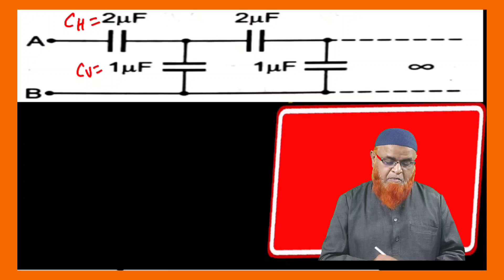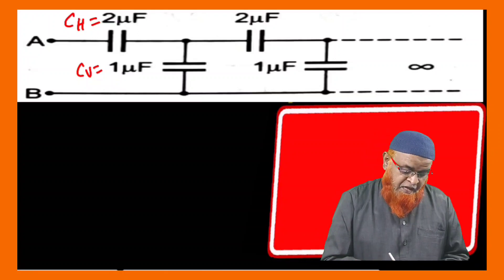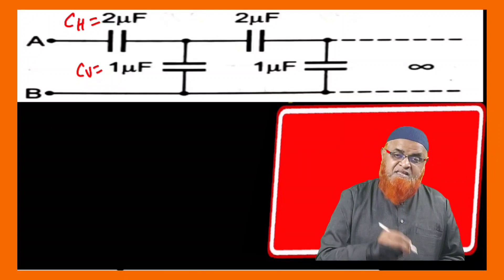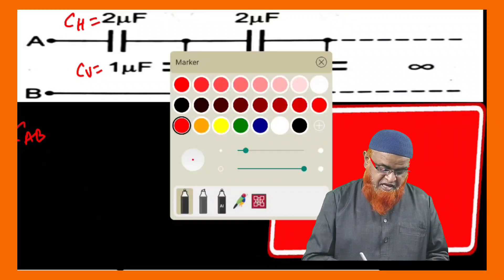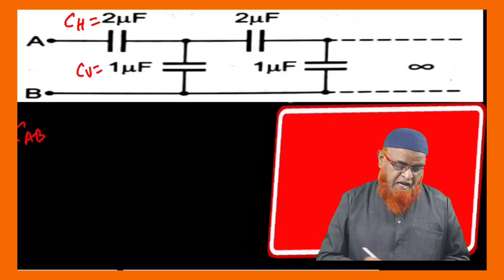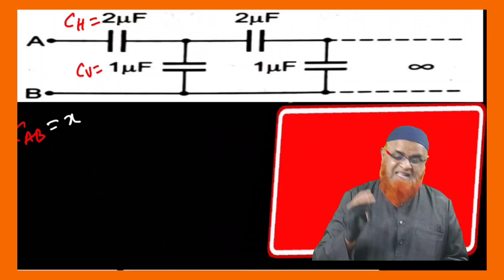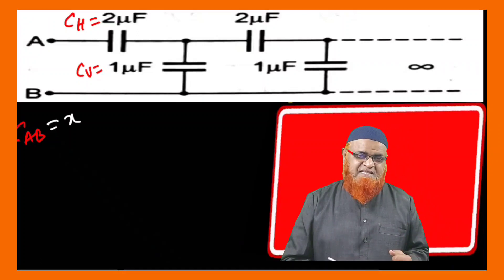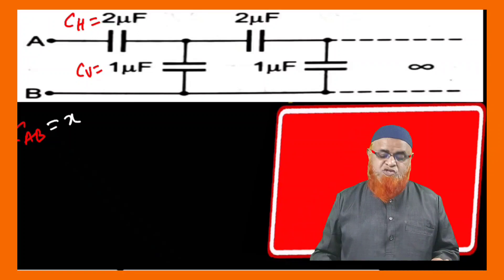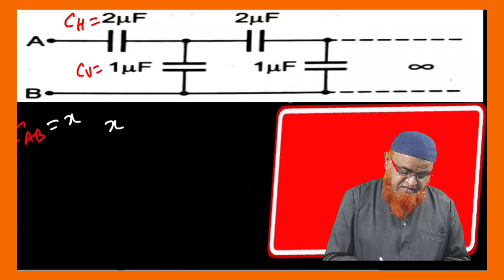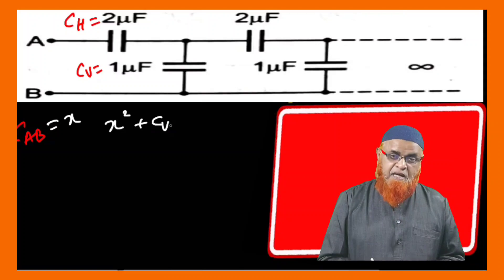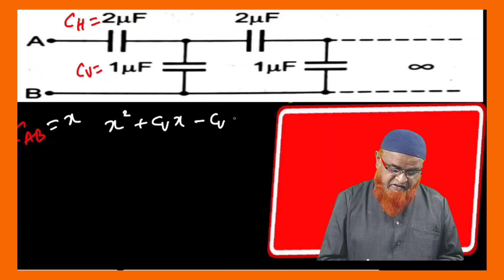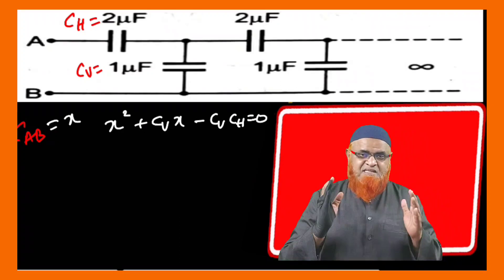We have to find out C_AB. In a simple shortcut method, let us consider C_AB = X. The shortcut formula is: X squared plus C_vertical times X minus C_vertical times C_horizontal equals zero.